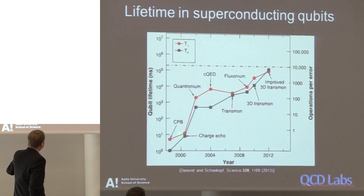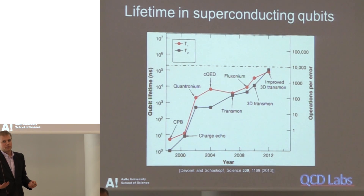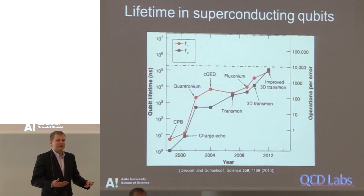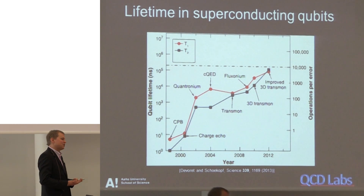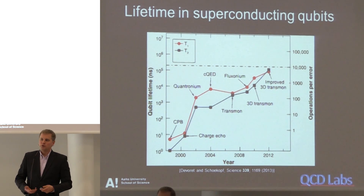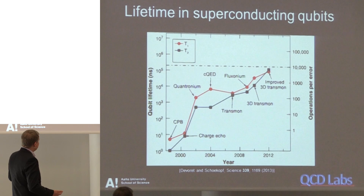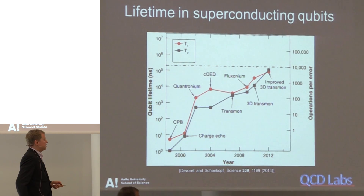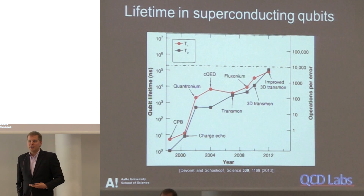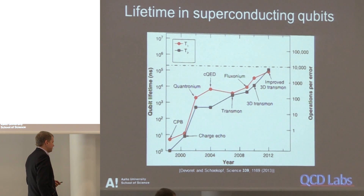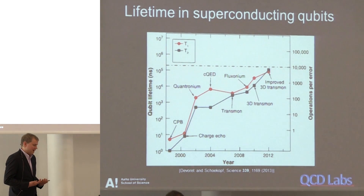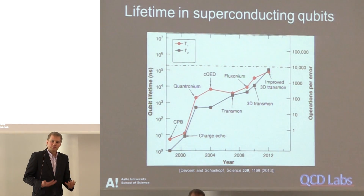Back in 2000, the lifetime of superconducting qubits was just 10 nanoseconds — you could do basically one operation before having an error, which was pretty desperate. However, there has been tremendous exponential growth in qubit lifetime over the years. Now we can do tens of thousands of operations before an error from finite qubit lifetime. This has convinced me that in the future we may be able to build a large-scale quantum computer out of these circuits.